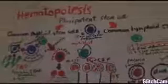All blood cells come from a single cell known as a pluripotent stem cell. 'Pluri' means multiple, so a single cell has the capacity to differentiate into multiple cells. The pluripotent stem cell differentiates into common myeloid stem cells and common lymphoid stem cells.